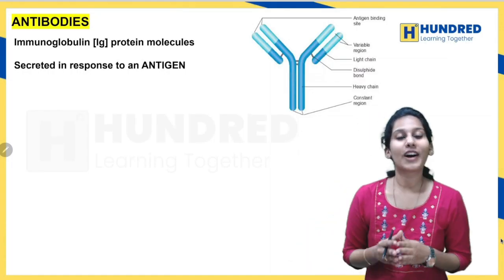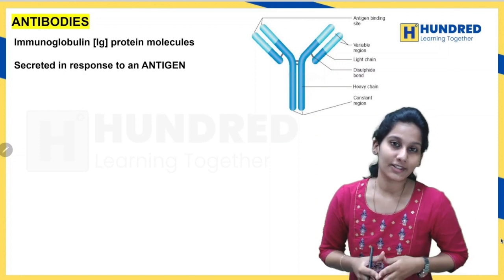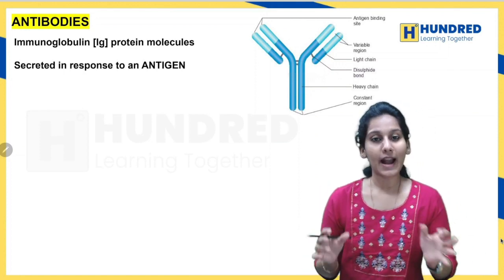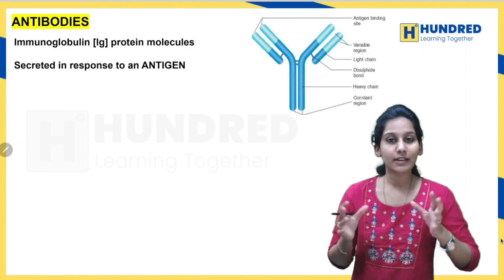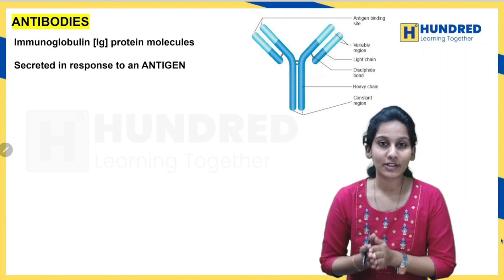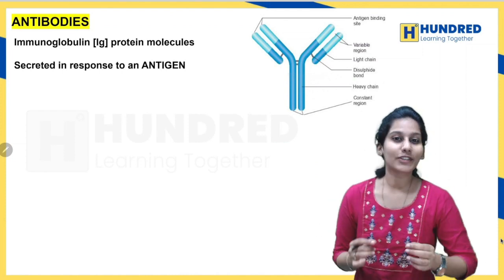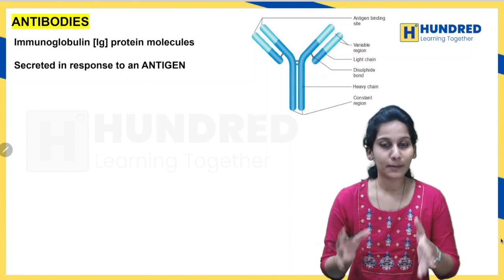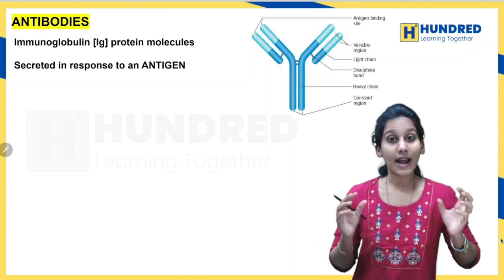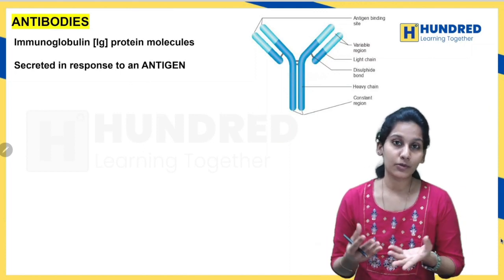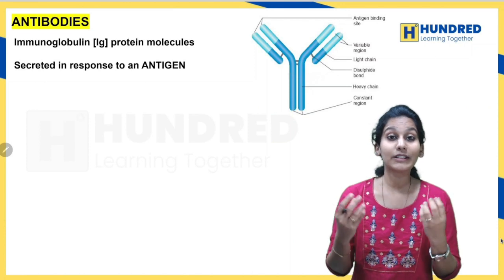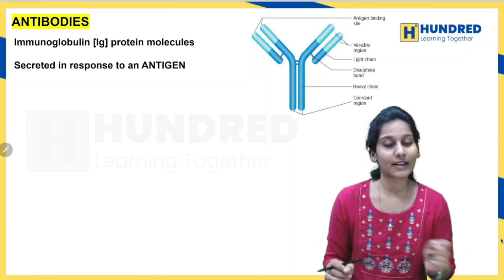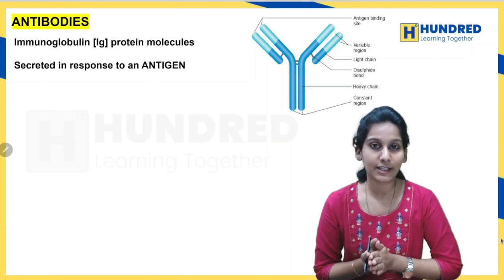Hello everyone, welcome to learning together on human health and diseases. We are going to talk about the topic of antibodies. We will cover the basic concepts of immunology, the different types of immunity — innate immunity and acquired immunity — and the different types of antibodies and their structure.